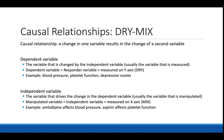A causal relationship is a relationship between two variables in which change in one variable results in the change of a second variable. In causal relationships, there are two types of variables: independent and dependent. The dependent variable is the variable changed by the independent variable and is usually measured as an outcome. The independent variable is the variable that is manipulated and causes a change in the dependent variable.